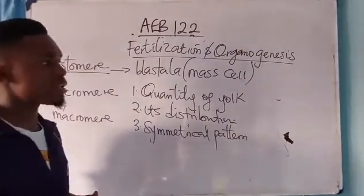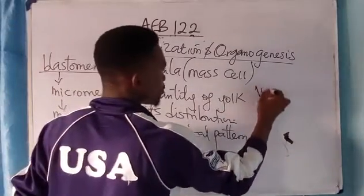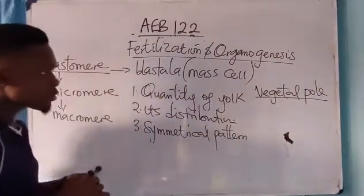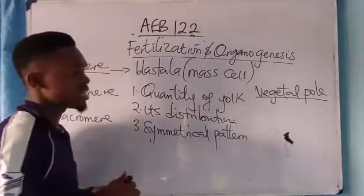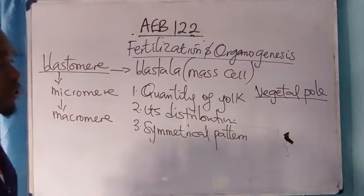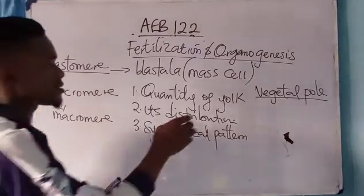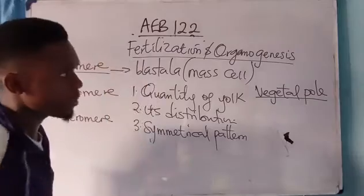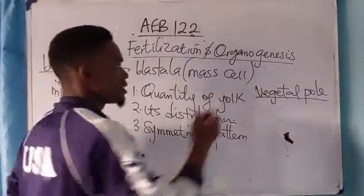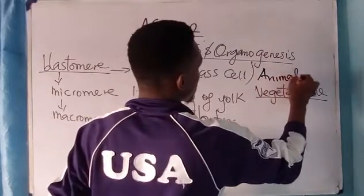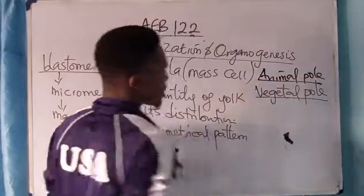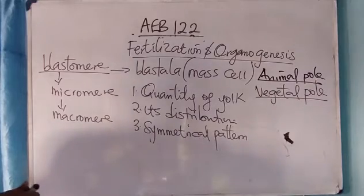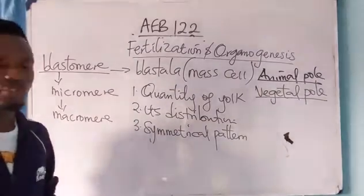The part of the egg that has a lot of yolk is called the vegetal pole. The vegetal pole possesses a lot of yolk and is found at the lower part of the egg. The part that has little or no yolk is called the animal pole, while the one with a lot of yolk is called the vegetal pole.